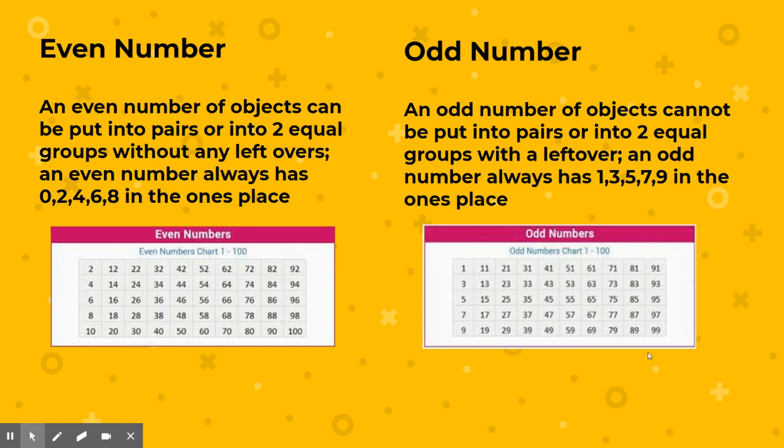Even and odd numbers are going to pop up. Here is a chart for 1 to 100 of even and odd. Remember that even numbers can be put into pairs or into two equal groups without any leftovers, and they always end in 0, 2, 4, 6, or 8. Odd numbers cannot be put into pairs or two equal groups without a leftover, and will always have 1, 3, 5, 7, or 9 in the ones place. There is a spelling mistake on the slide — it should say 'without a leftover.' Odd numbers always have a partner hanging out with nobody to dance with.